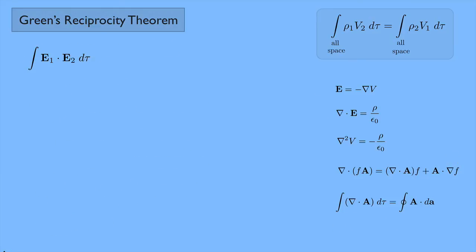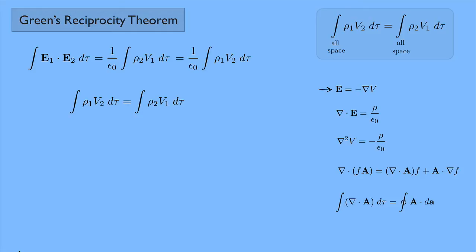To recap: I started with the integral of E1·E2 and turned it into (1/ε0) times the integral of ρ2 V1 dτ. But there was nothing special about the order — I could have started by rewriting E2 instead of E1 and gone through everything with 1 and 2 switched. That means the integral also equals (1/ε0) times the integral of ρ1 V2. Canceling the 1/ε0 factors gives the reciprocity theorem. This is one way to prove it; there are many others.